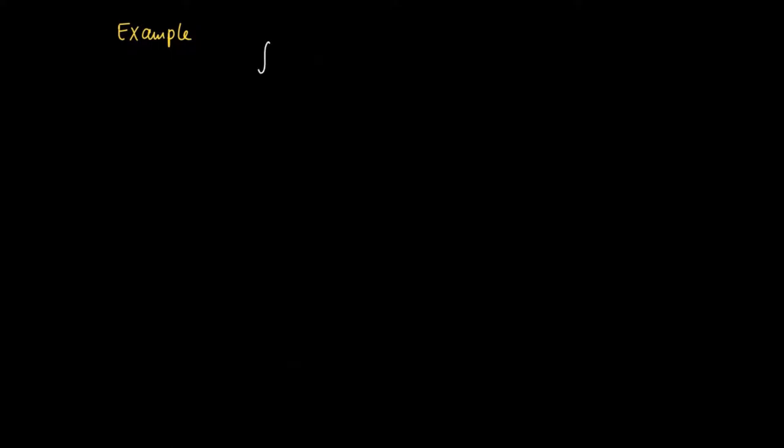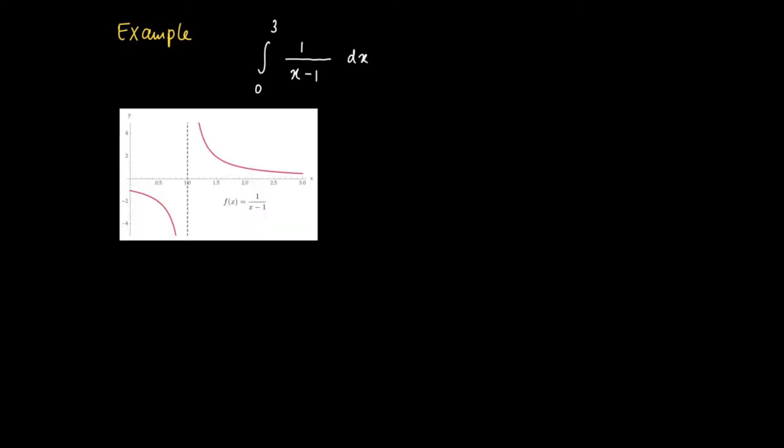Here's another example of an improper integral with a vertical asymptote in the middle of the interval. Consider the integral from 0 to 3 of 1 over x minus 1 dx.